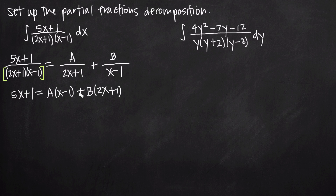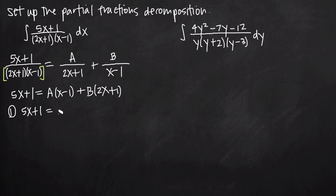At this point you have two different options to find constants A and B. Method number one is what I usually use: multiply out the right hand side, group like terms together, and then compare coefficients from the left and right hand side. So we get 5x plus 1 equals — distributing A across x minus 1 — ax minus a, and distributing B across 2x plus 1 — plus 2bx plus b.